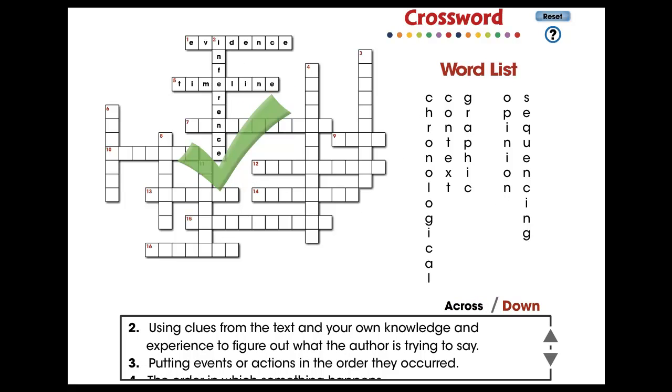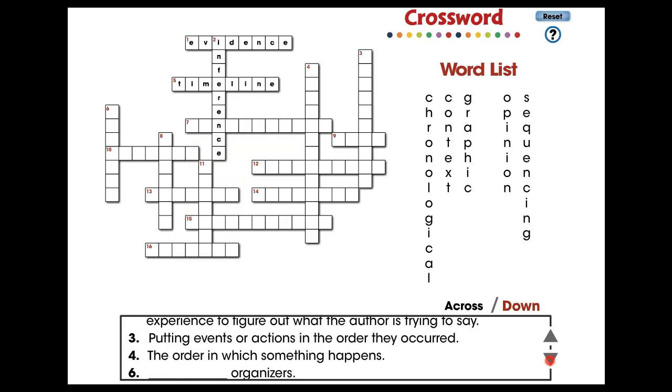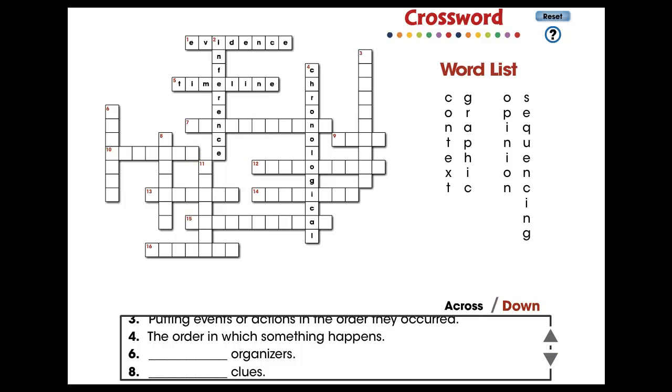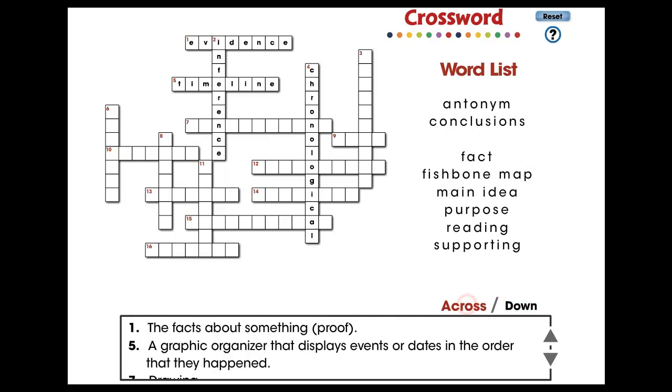Drag a word from the list to its correct position in the puzzle. Use the arrows to scroll through all the clues. Switch between across and down clues and words.